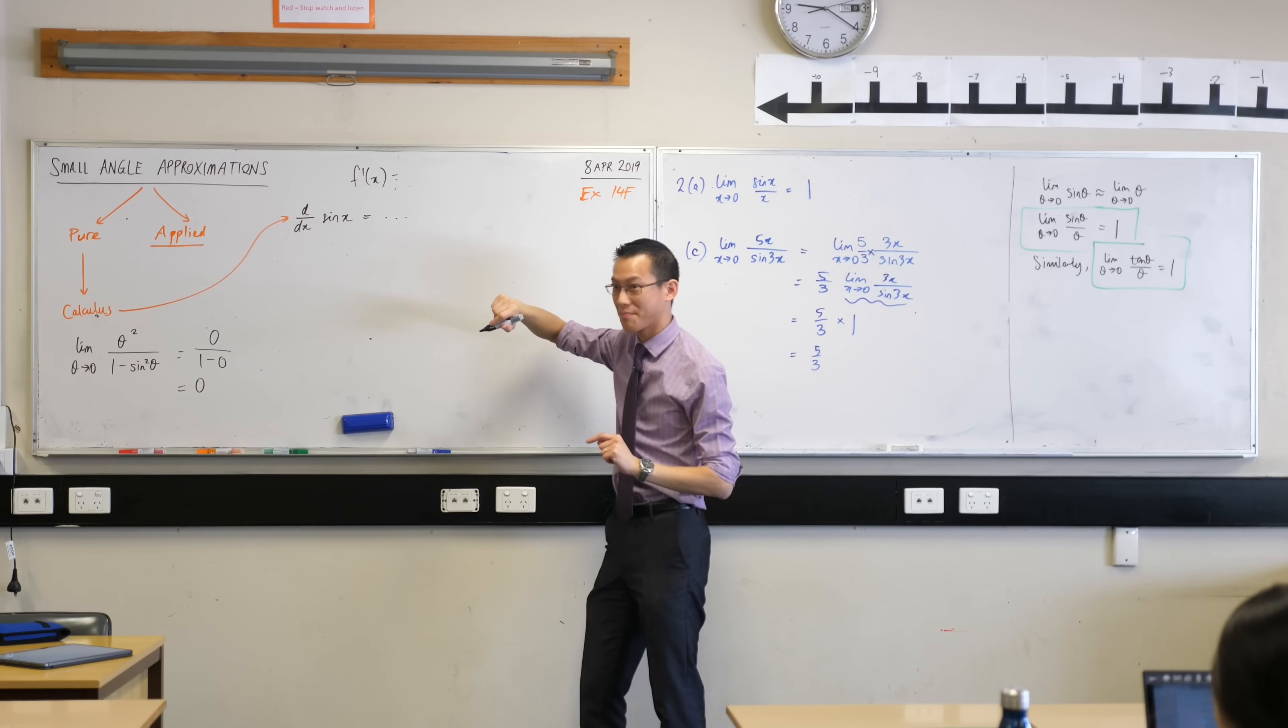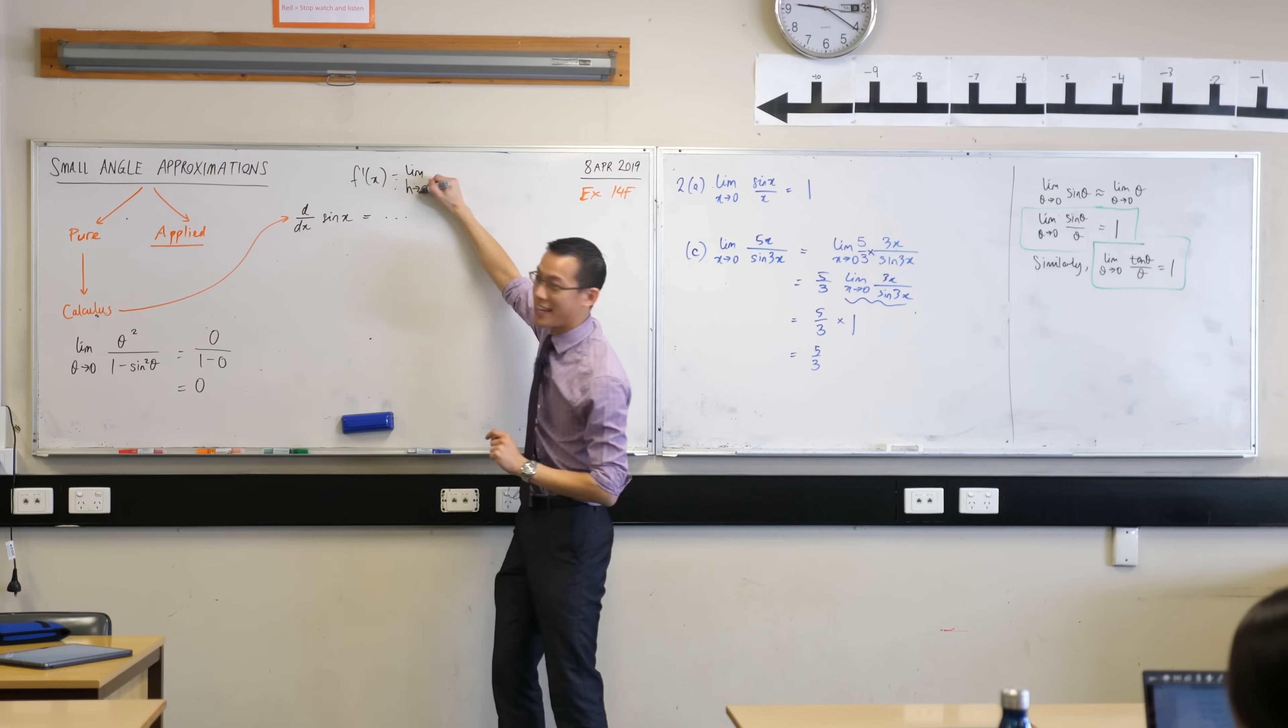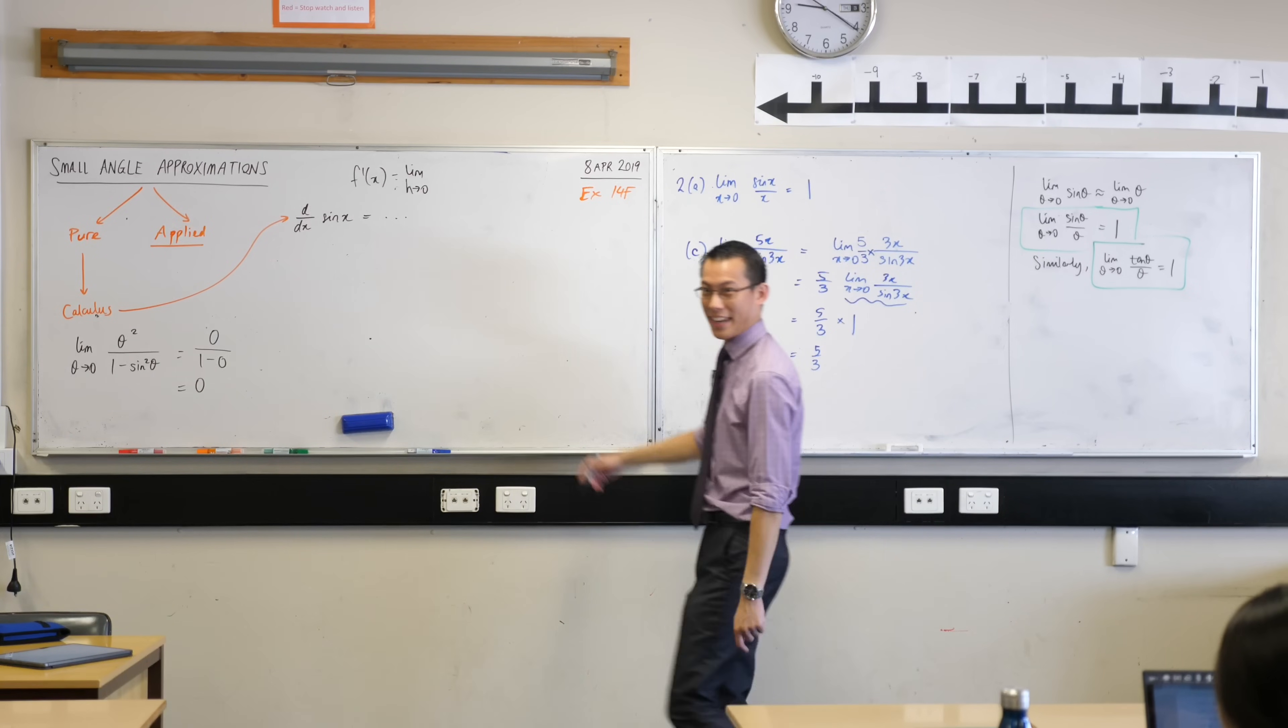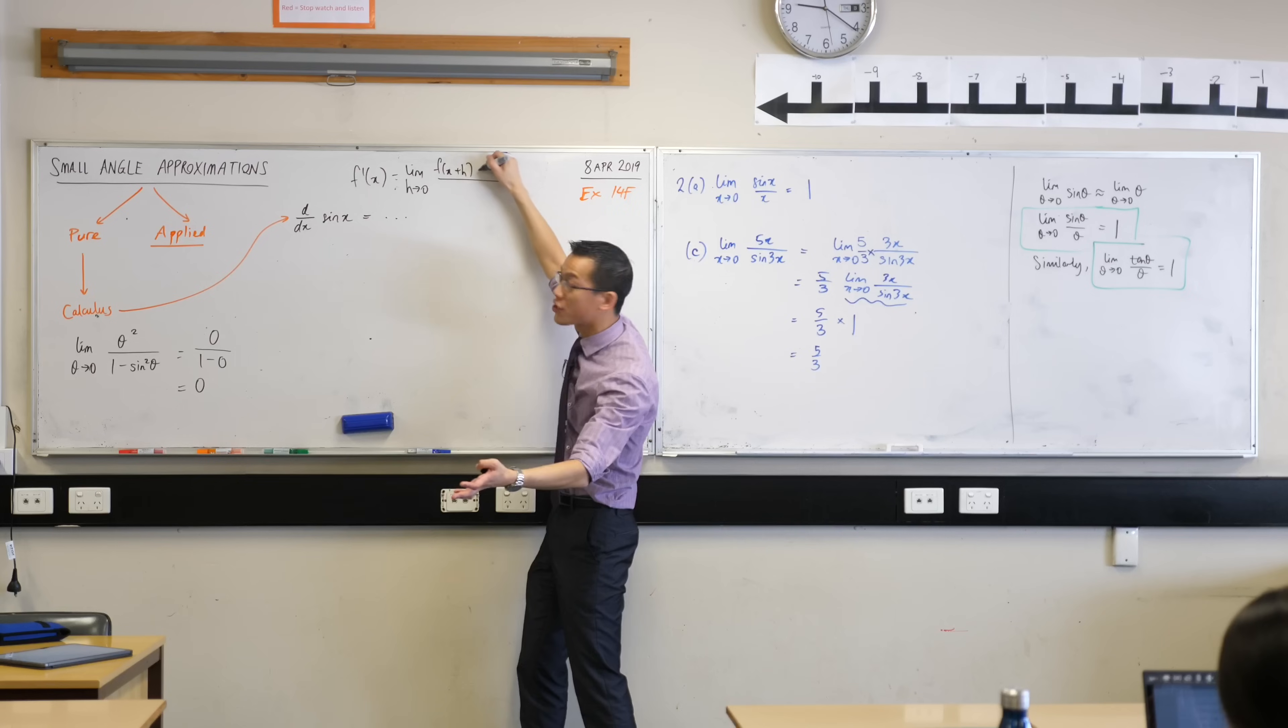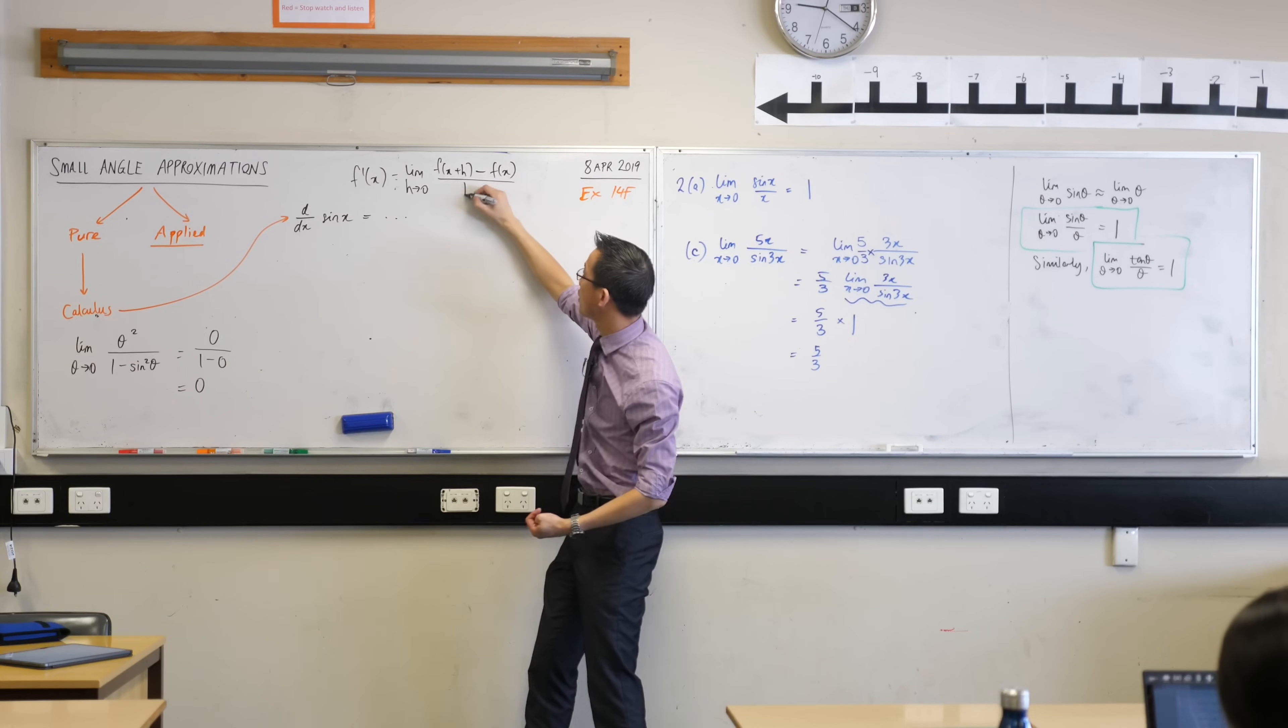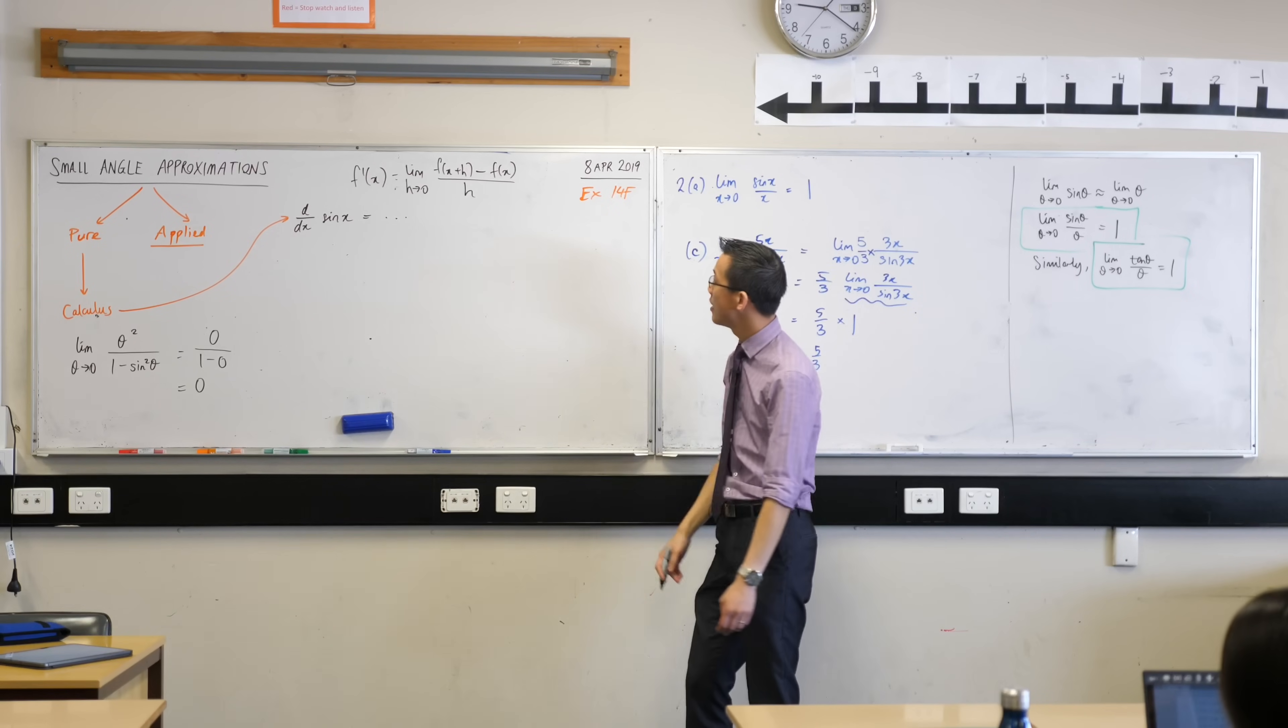f dash is going to be equal to, I'll start you off, there's a limit. That's the part everyone forgets. And then what happens after that? What am I getting on the top? I've got a fraction, right, and on the top I'm going to get, come on, tell me, f of x plus h, thank you very much. Minus f of x, and then what's on our denominator? h, very good. And this is just the rise over run that we get from the gradient function, right?